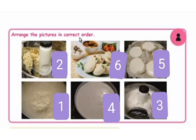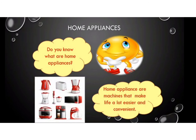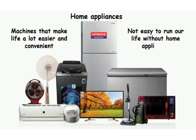Now let us discuss about home appliances. Why do we use home appliances? It is not easy to run our life these days without home appliances. Home appliances are machines that make life easier and convenient. In this section, we will learn about a few such appliances such as electric bulb, fan, pressure cooker, gas stove, mixer, grinder, vegetable cutter, kettle, electric cooker, induction stove, coffee maker, etc.